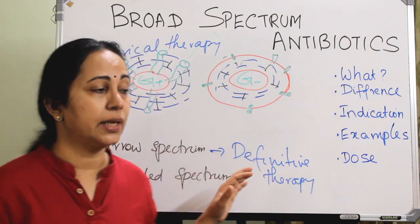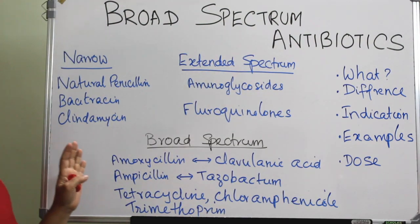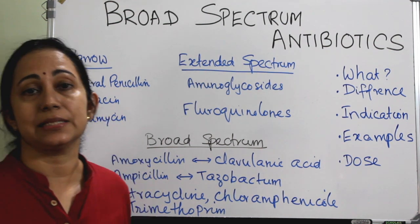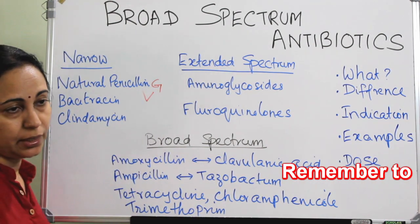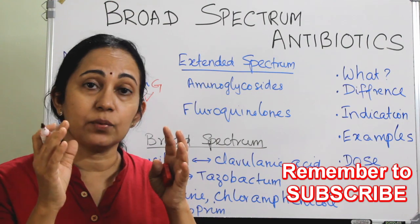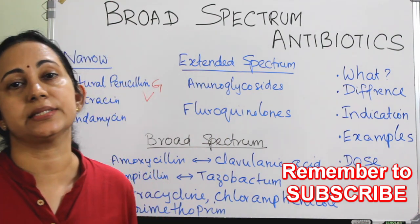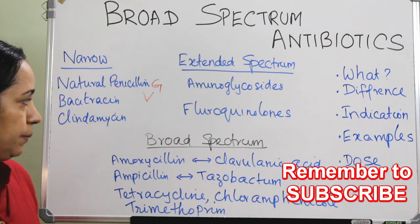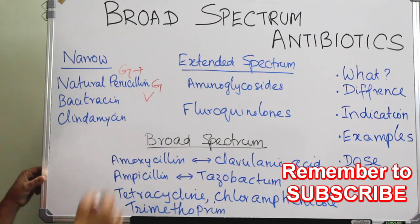Now we can see examples of narrow spectrum, extended spectrum, and broad spectrum antibiotics. Narrow spectrum mainly includes the natural penicillins — penicillin G and penicillin V. Gram positive bacteria has a very thick cell wall but with very wide or large openings, so that even the obese penicillins can go through and attach to the cell membrane. Bacitracin and clindamycin are also narrow spectrum, mainly against gram positive organisms.